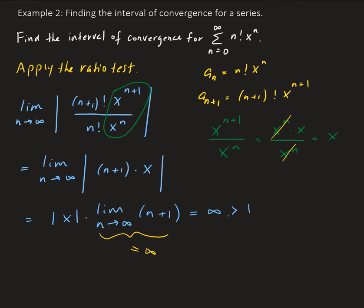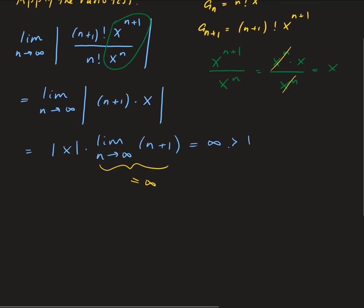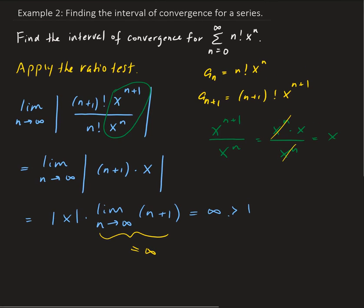In this case, the center is at zero because if you look up here, we have x to the n. So we don't have a shift — you can think of this as (x minus 0) to the n. So the series will always converge at the origin, which is the center point.